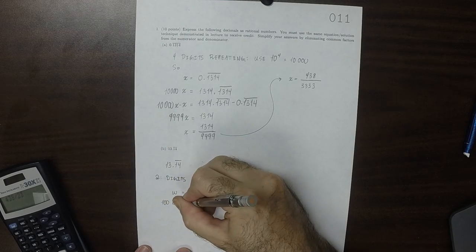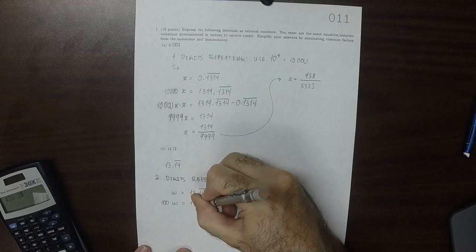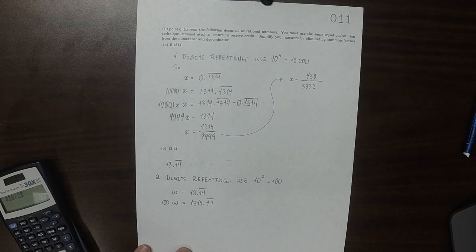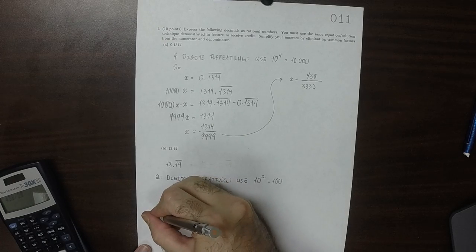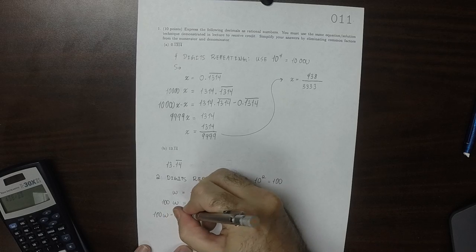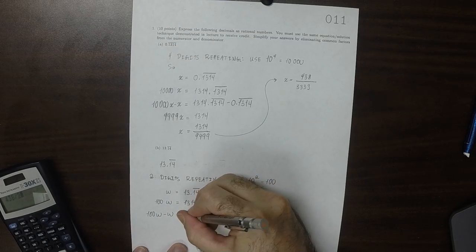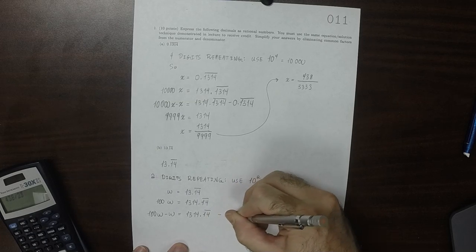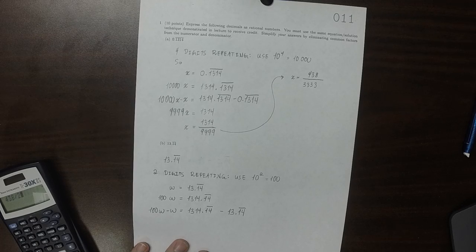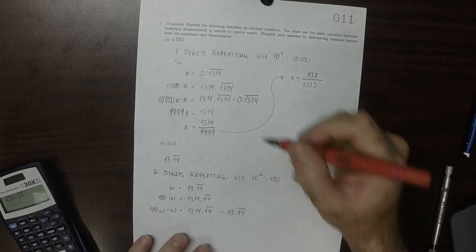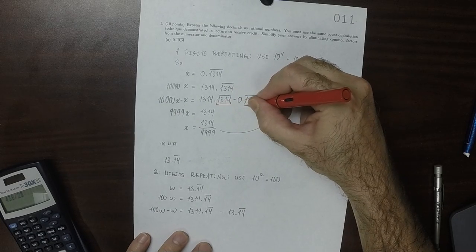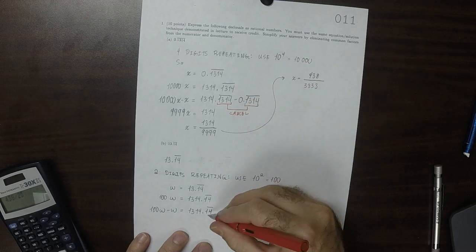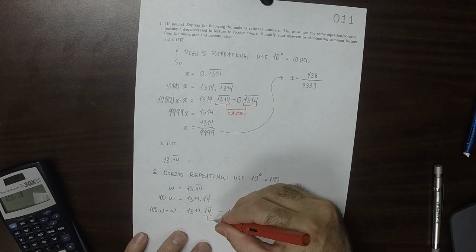So 100w is 1314.14 repeating. So if we do 100w and we subtract 1w, then this would be 1314.14 repeating minus 13.14 with the 14 repeating. So now, the same trick that we used above. The repeating decimal will cancel.